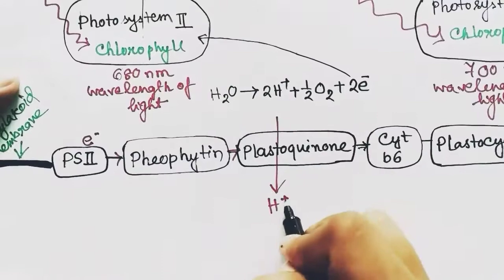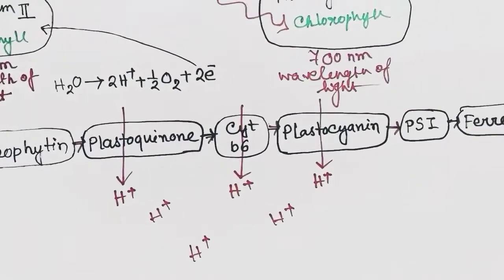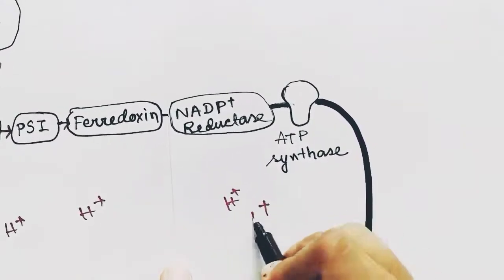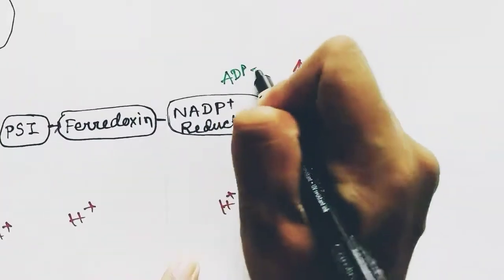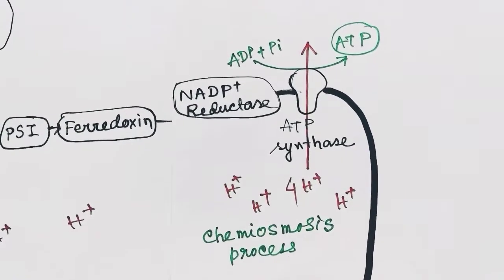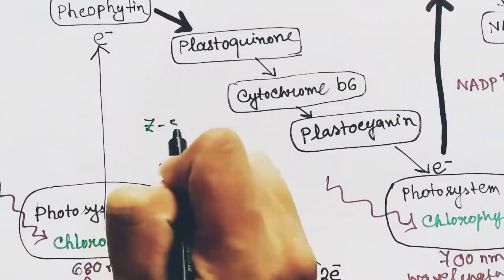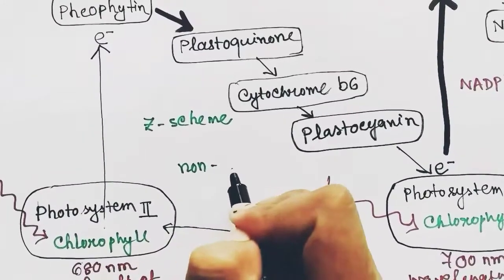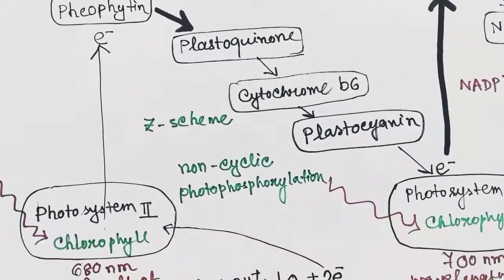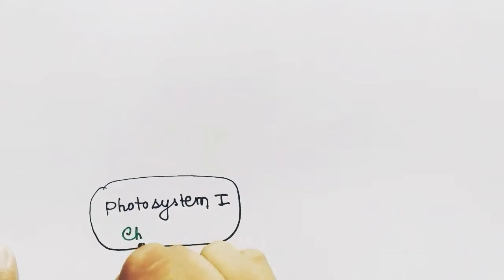Now these proteins will bring in the H⁺ ions, which will increase the H⁺ concentration in the lumen. These H⁺ ions will be pumped out of the lumen of the thylakoid to the stroma by ATP synthase, forming ATP from ADP. This process is called chemiosmosis. The electron will not come back to Photosystem 2, so it is called non-cyclic photophosphorylation, and it looks like a Z, so it is called the Z scheme.